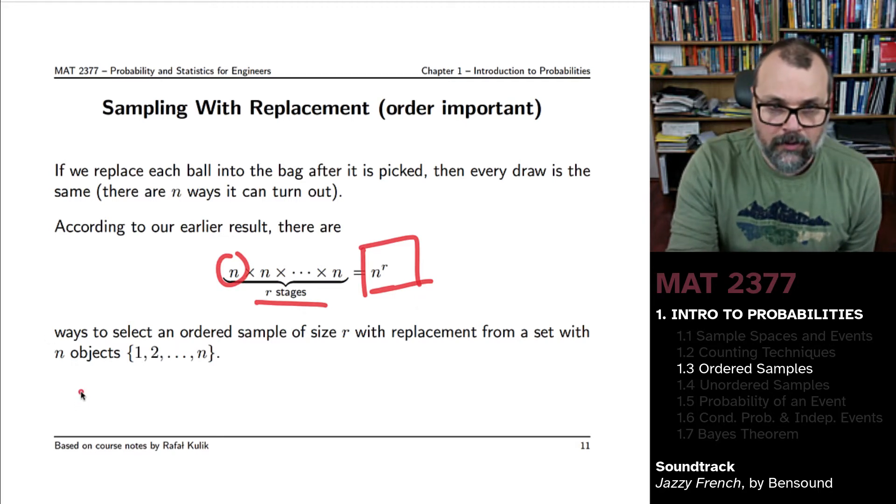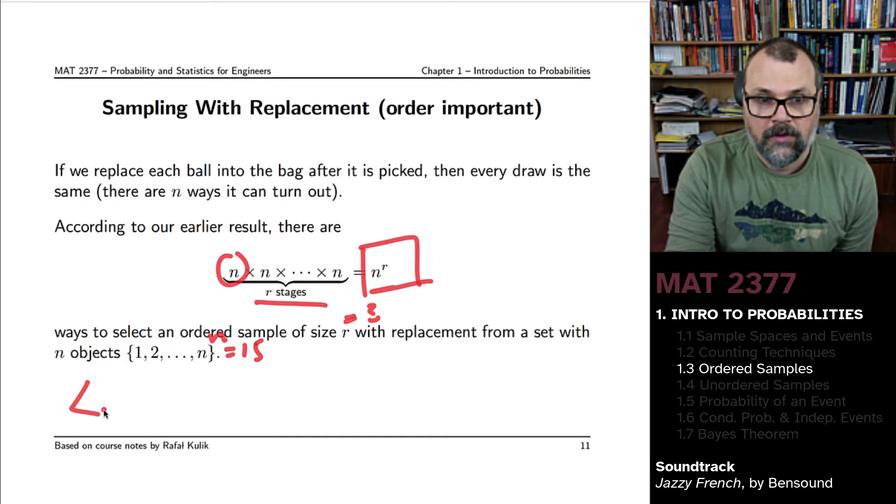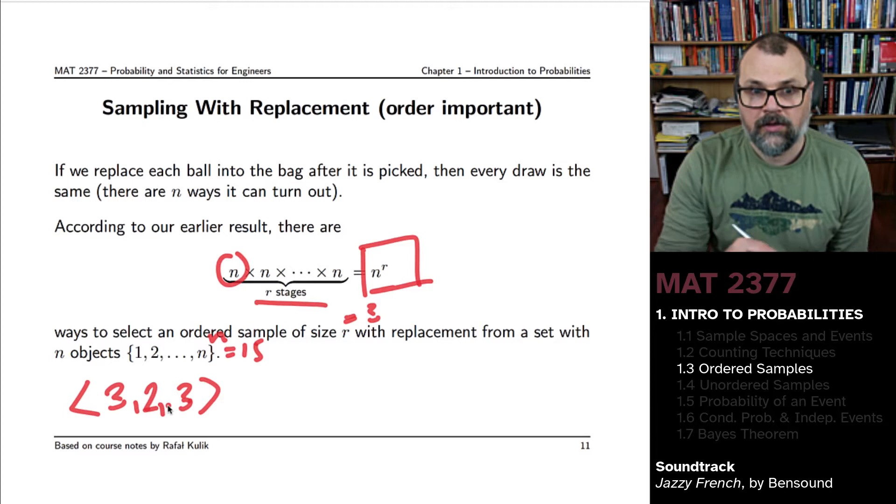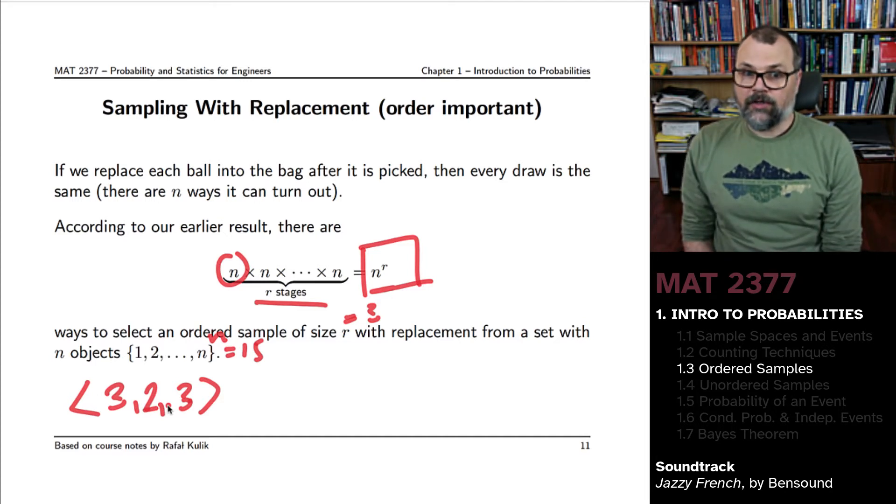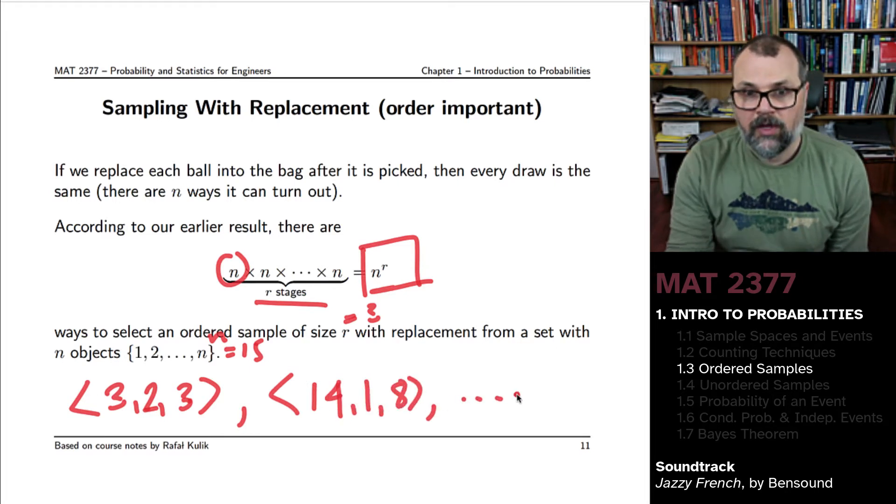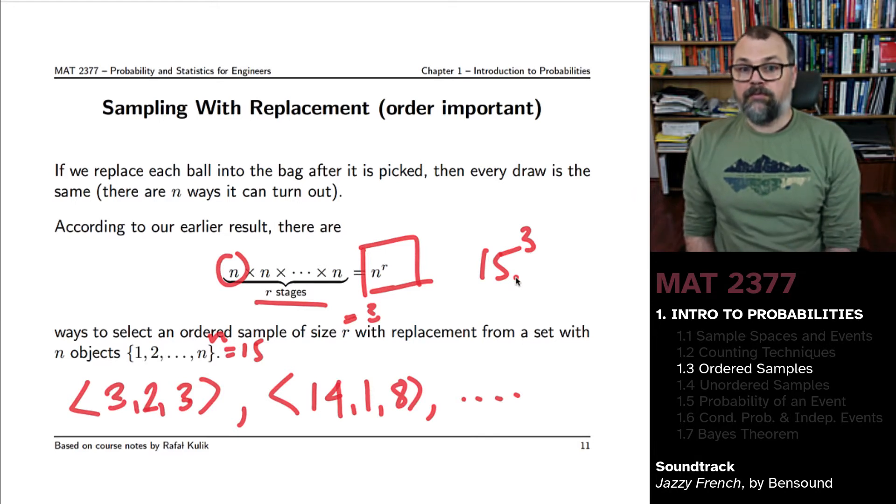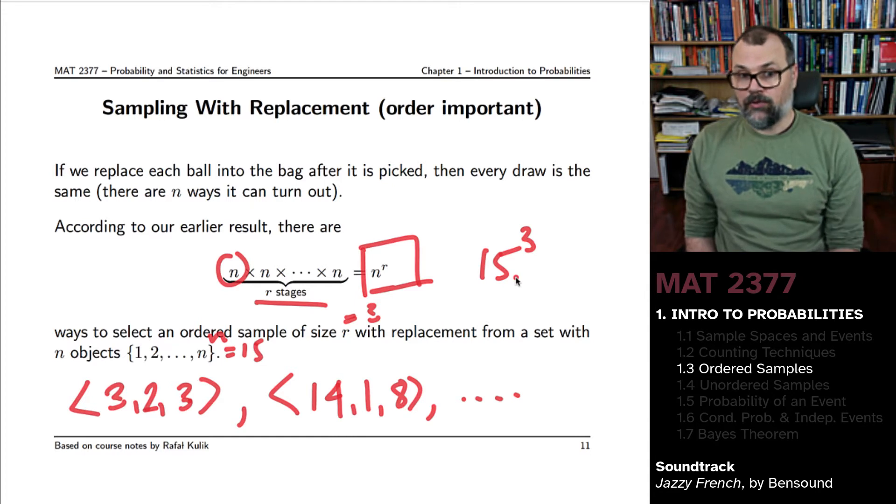We had seen before, if R is equal to 3 for instance, and perhaps N is equal to 15, you might have 3, 2, 3 as an ordered arrangement. You might also have 14, 1, 8 and so forth. And in total, you're going to have 15 to the 3 possible ordered samples with replacement.